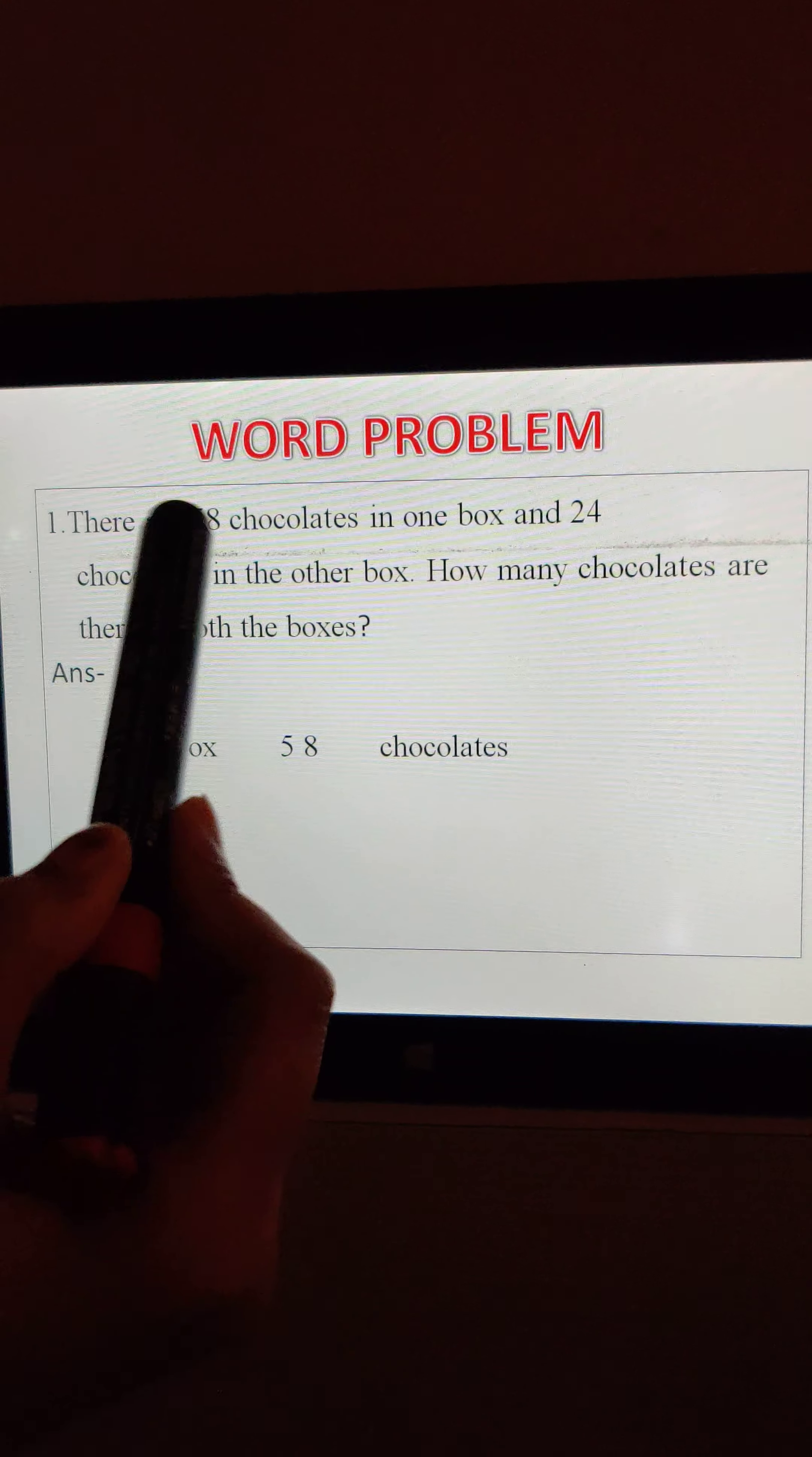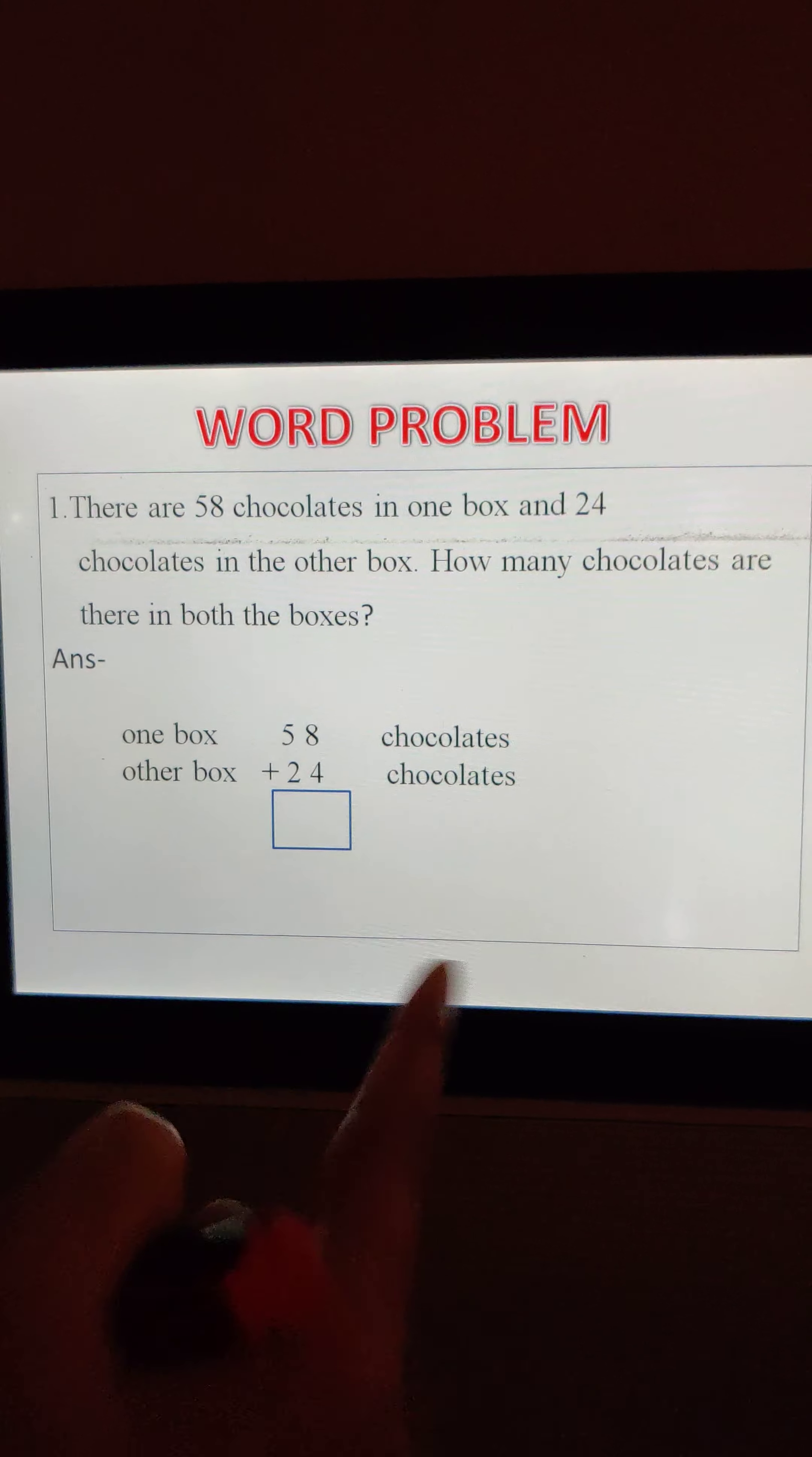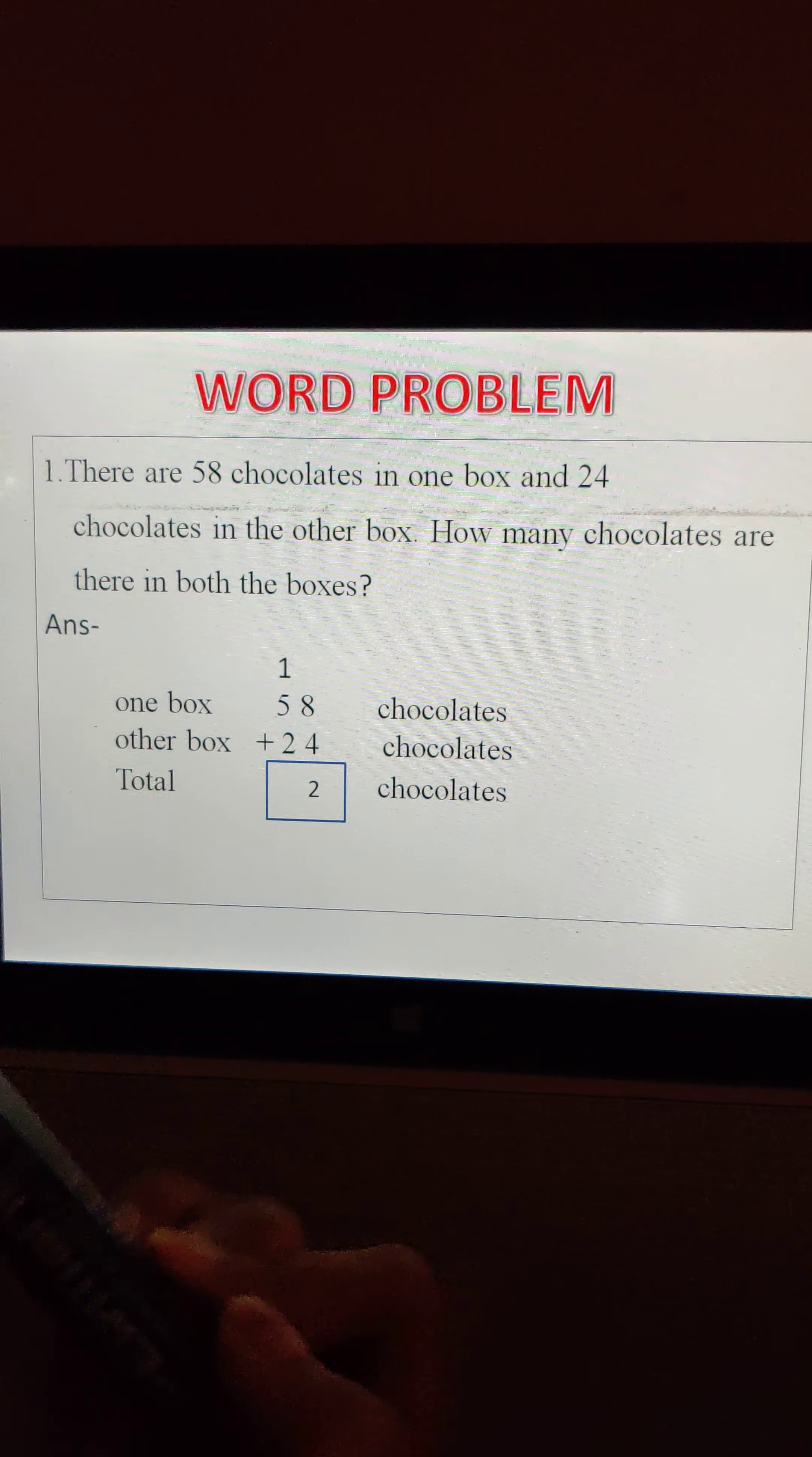One box is having how many? 58 chocolates. Other box, 24 chocolates, see? Then we will make this box. In your book also, you have to make total chocolates. We have to find out. So 8 plus 4, 12. So 1 we will write here, this side and 2 here. Here we will write.